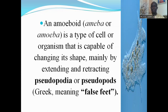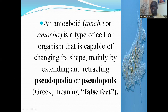The most widely known amoeboid protozoan is Amoeba proteus. These organisms are capable of changing their shape mainly by extending and retracting pseudopodia or pseudopods. They extend their pseudopods and then flow into them, as shown on the right-hand side of the screen. A typical Amoeba proteus does not have a definite shape; it can change its shape at any time. The pseudopods are extended and the cell flows into those extensions or protrusions.